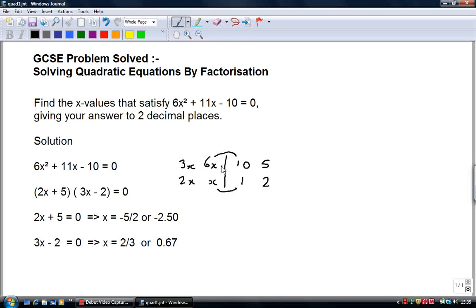You can also do the 6x times 1 and x times 10. So that's 6 and 10. Again, you can't manipulate those to get 11x. You can also do 6x times 5 and x times 2. So that's 30 and 2. No, that's no good. Or you can do 6 times 2 and x times 5. That's 12 and 5. Again, you can't get that.